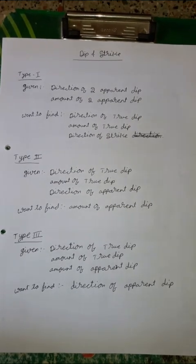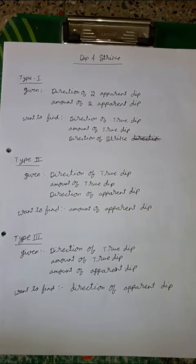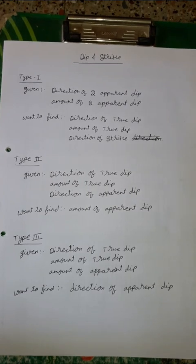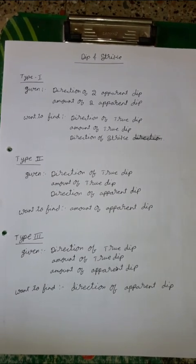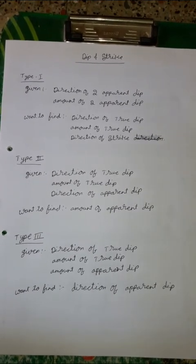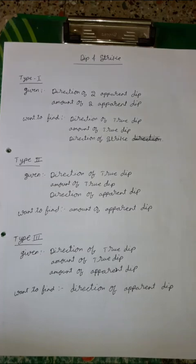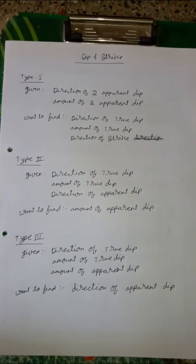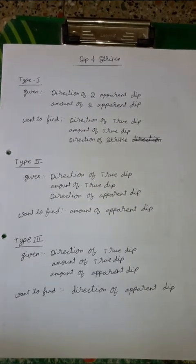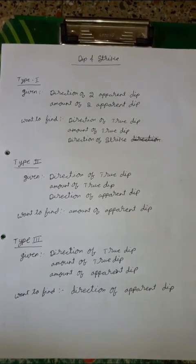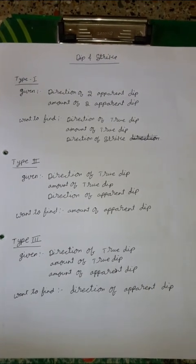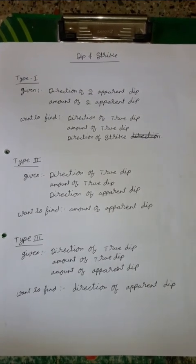In type 2, they have given the direction of true dip, the amount of true dip, and the direction of apparent dip. We want to find the amount of apparent dip. In the third type, they have given the direction of true dip, the amount of true dip, and the amount of apparent dip. We want to find the direction of apparent dip.